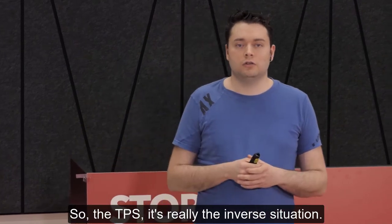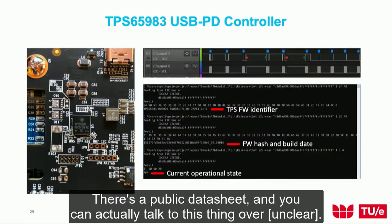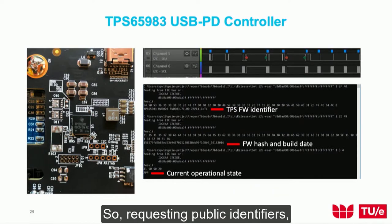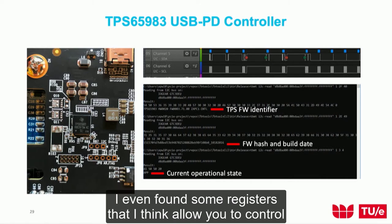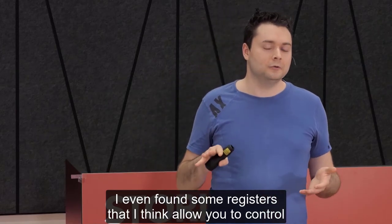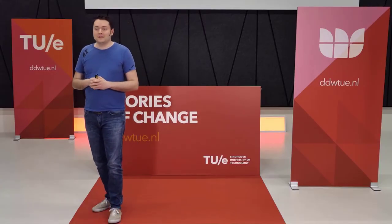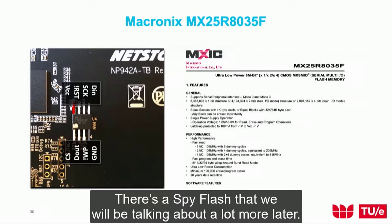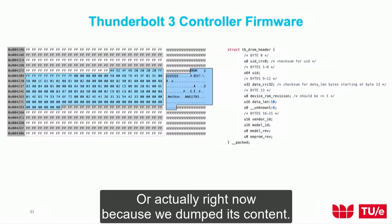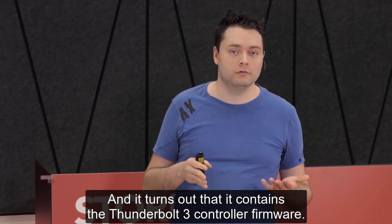Over I2C we could request firmware identifiers, the operational state, and even found registers that appear to control output voltage. The SPI flash contains the Thunderbolt 3 controller firmware. When you examine this firmware, you immediately notice a section called DROM, which stores all the parameters that determine Thunderbolt device identity.